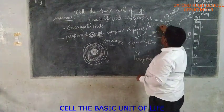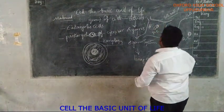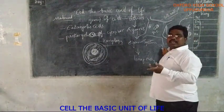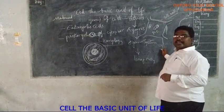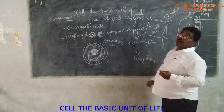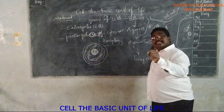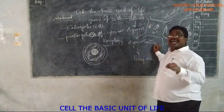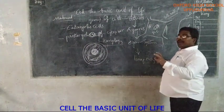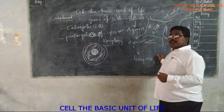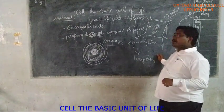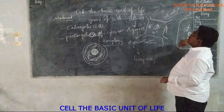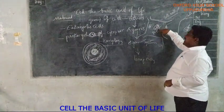In plant cells, chloroplasts are present, while in animal cells, chloroplasts are absent. Both cells contain mitochondria, ribosomes, Golgi complex, and endoplasmic reticulum. However, not all plant cells contain chloroplasts — only the green-colored parts like leaves and tender stems contain them. The bark, fruits, and roots of plants do not have chloroplasts. This is one of the major differences between plant and animal cells.